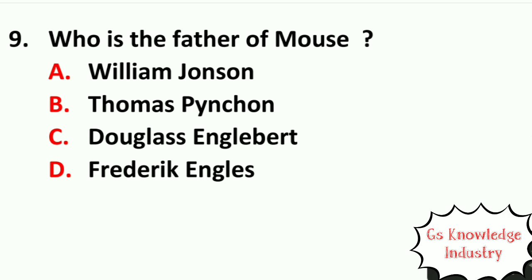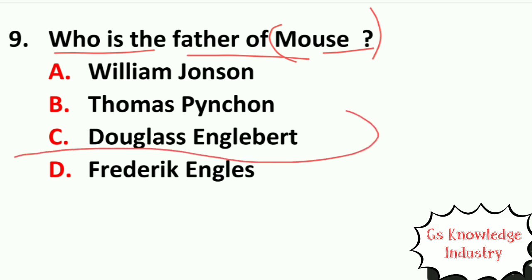Question nine: who is the father of the computer mouse? Option A, William Johnson. Option B, Thomas Pincon. Option C, Douglas Engelbart. Option D, Frederick Angel. The right answer is Option C — Douglas Engelbart is the father of the computer mouse.